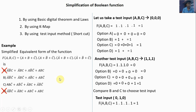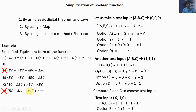Function F(A, B, C) for test input 0, 1, 0: A is 0, B is 1 — so 1. A is 0, B bar is 0, C bar is 1 — so 1. A bar is 1, B is 1 — so 1. So the function gives 1 for test input 0, 1, 0. Substitute the input for option B — option B gives 1. Option C gives 0. So option C is wrong and option B is correct.